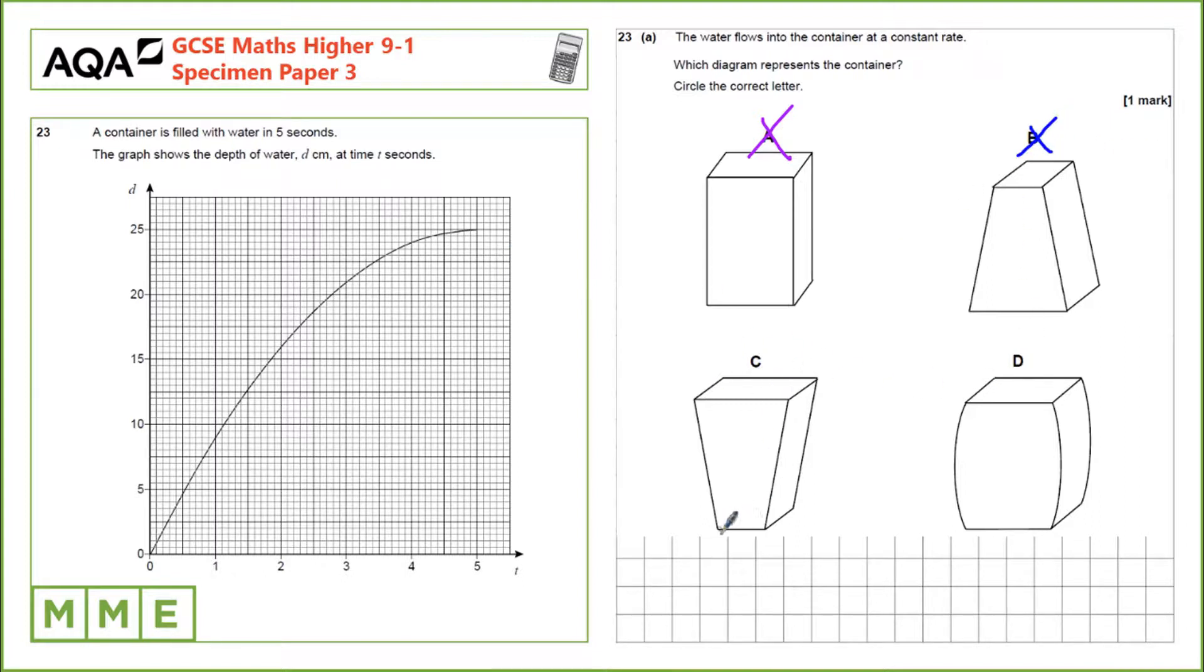For C, we have that there's a small width at the bottom and a larger width at the top so we expect the depth to increase quickly at the start and slow down towards the end, which is actually what we have. There's a quick increase here and it's starting to slow down towards the end. It's likely to be C. We'll check D just to make sure.